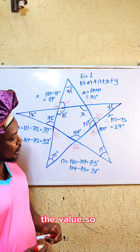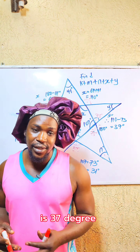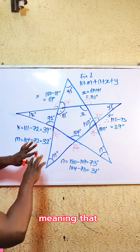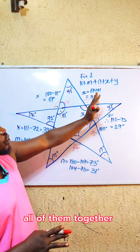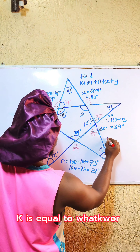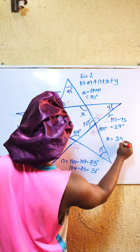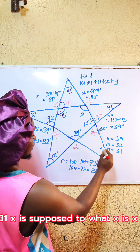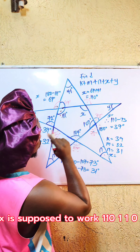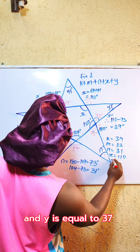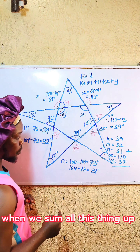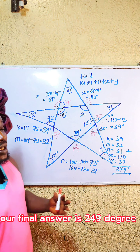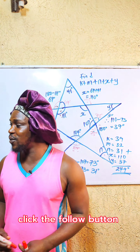The value of y is 37 degrees. Now for the final answer: k + m + n + x + y. k = 39, m = 32, n = 31, x = 110, and y = 37. When we sum all of these together we get 249 degrees. Our final answer is 249 degrees. Click the follow button and see you in 2023!